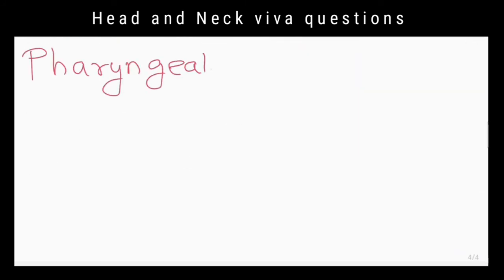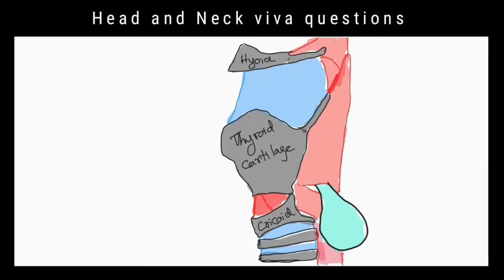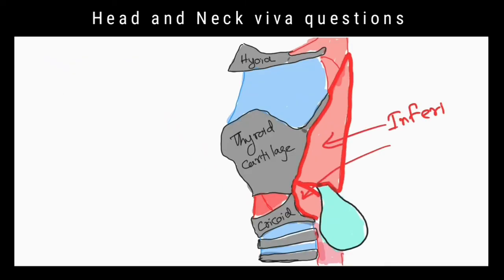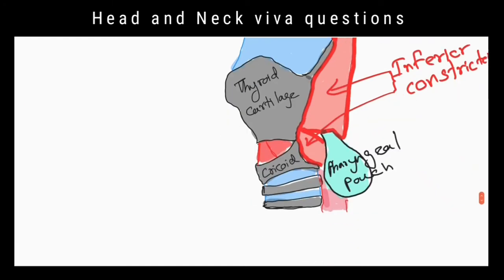What is a pharyngeal pouch? A bulging of mucosa and submucosa through a potential gap between the upper oblique and lower transverse parts of the inferior constrictor muscle.